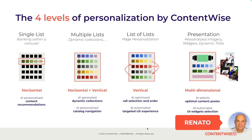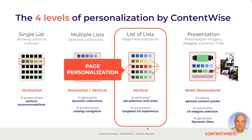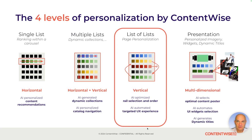Hi, it's Renato. In this video we are going to take a look at the third level of personalization, which at ContentWise we call Page Personalization. This is the ability for the UX engine to select, sort and rearrange carousels in the page, not only according to the type of content that the users might like — which is used by the single-list and the multiple-list perspective — but also on the way the users interact with the service.